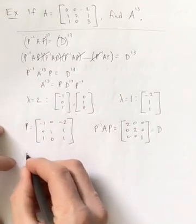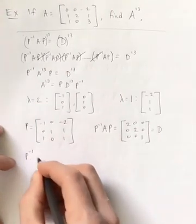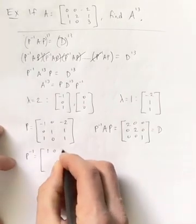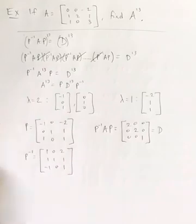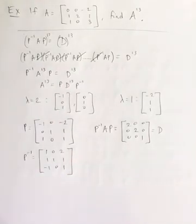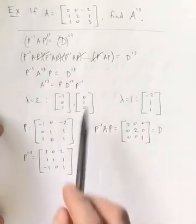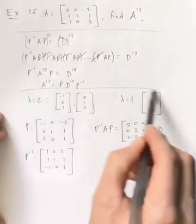So let me remind you because we found this as well. P inverse is 1, 0, 2, 1, 1, 1, negative 1, 0, 1. We found that four problems back, four example problems back.